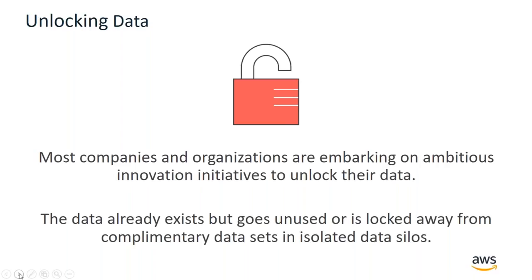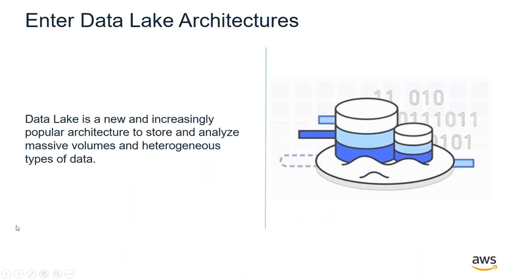So how can we unlock this value? We've heard a lot about data lakes in the last couple of years. It's a newer architecture and increasingly popular. The idea is that we've got an architecture where we can analyze massive volumes of data and store it. Often this data is what we call heterogeneous, meaning it may come from different sources, have different types of structure, different lookup fields — all of which adds to the challenge.